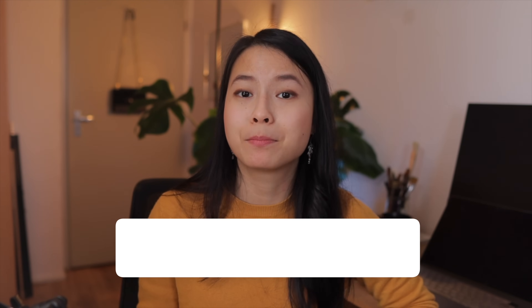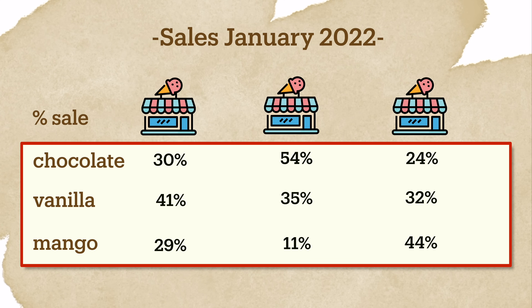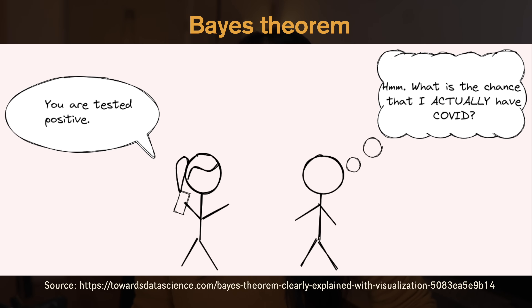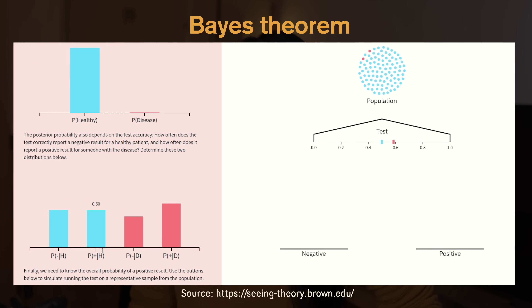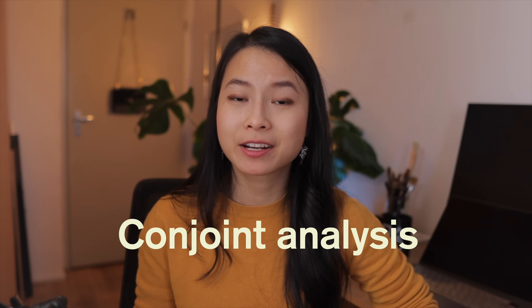Another common analysis problem is measuring similarities. For example, if we have three ice cream stores that sell different numbers of ice creams of different kinds, how do we know which stores are more similar to each other in terms of sales? Another example is using Bayes' theorem for data inference and decision making, which is very useful for scenario analysis to predict the probability of some event. Or if you're working with survey data, it's important to know how to perform conjoint analysis for market research to understand customer preferences. These are all very useful statistical methods, but they are completely overlooked in the data science courses we see today.